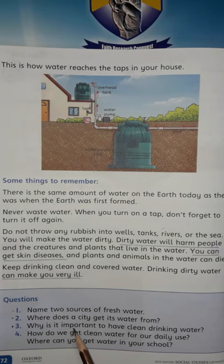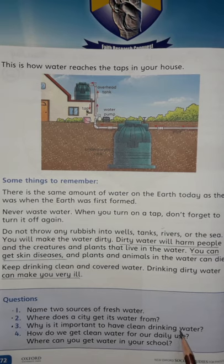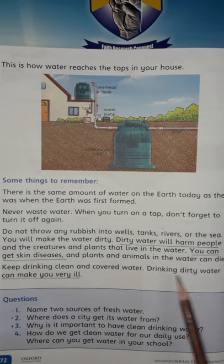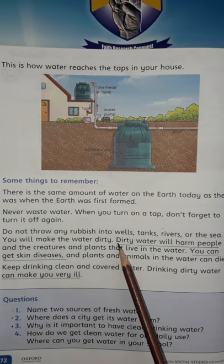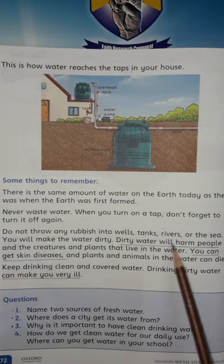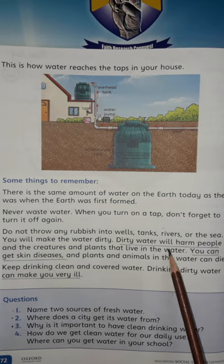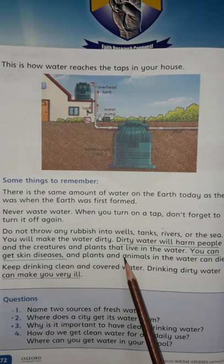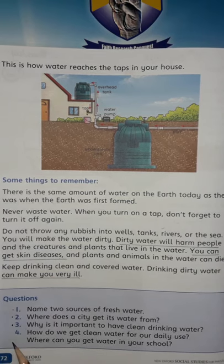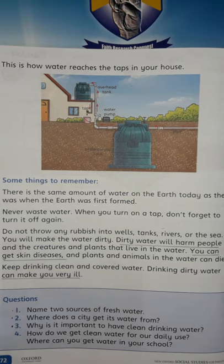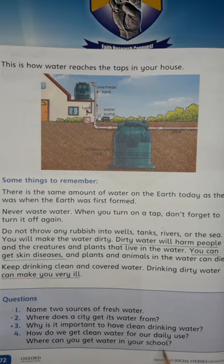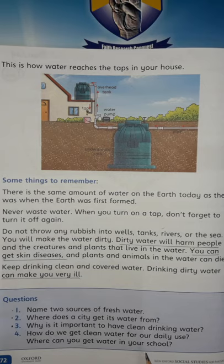Question 3: Why is it important to have clean drinking water? It is important because dirty drinking water can make you very ill. Dirty water will also harm people and the creatures and plants that live in water, and you can get skin diseases. Question 4: How do we get clean water for our daily use? We get clean water from reservoirs, dams, and filtration plants. You can also get water in your school from a water cooler.